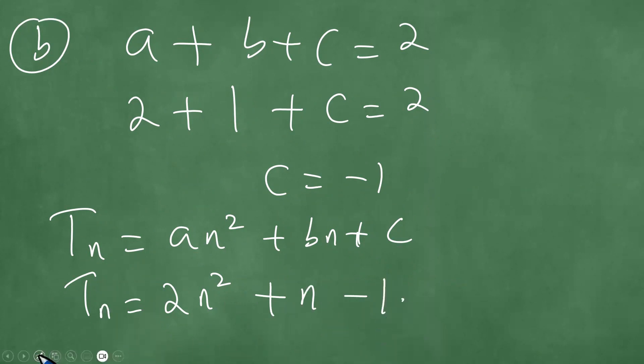So this is the quadratic, this is the general term of the quadratic sequence, the quadratic pattern. The general term is 2n squared plus n minus 1.